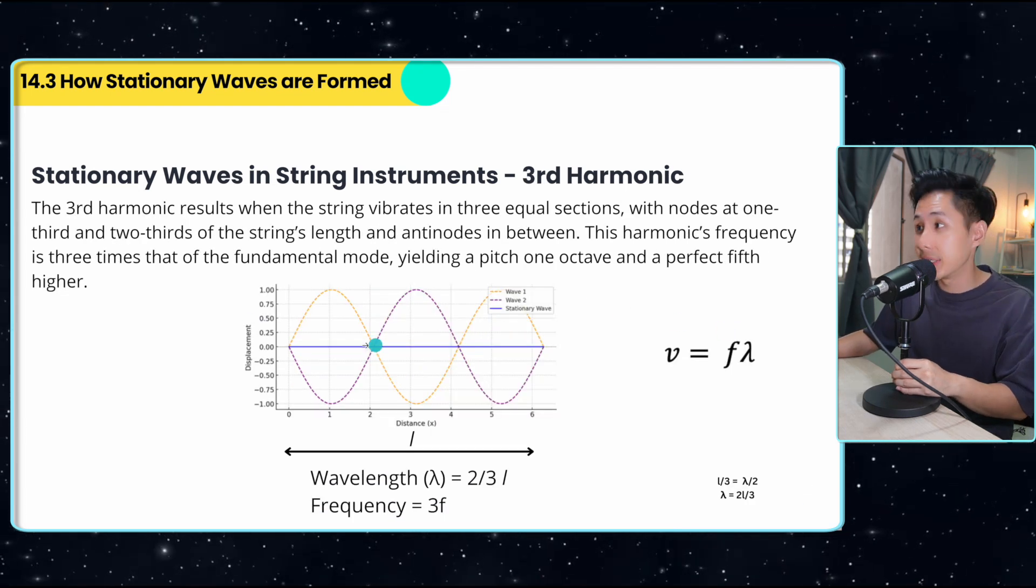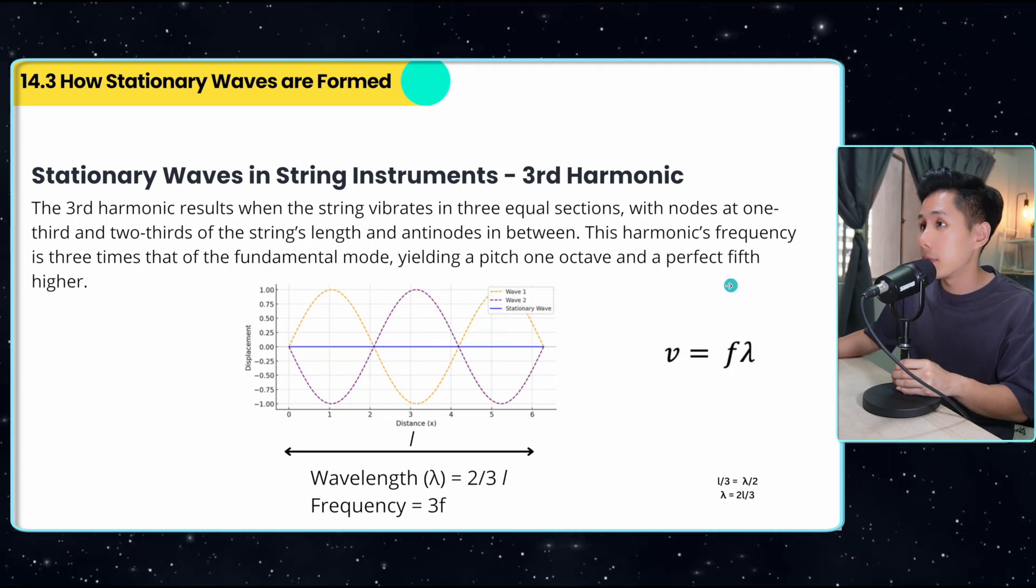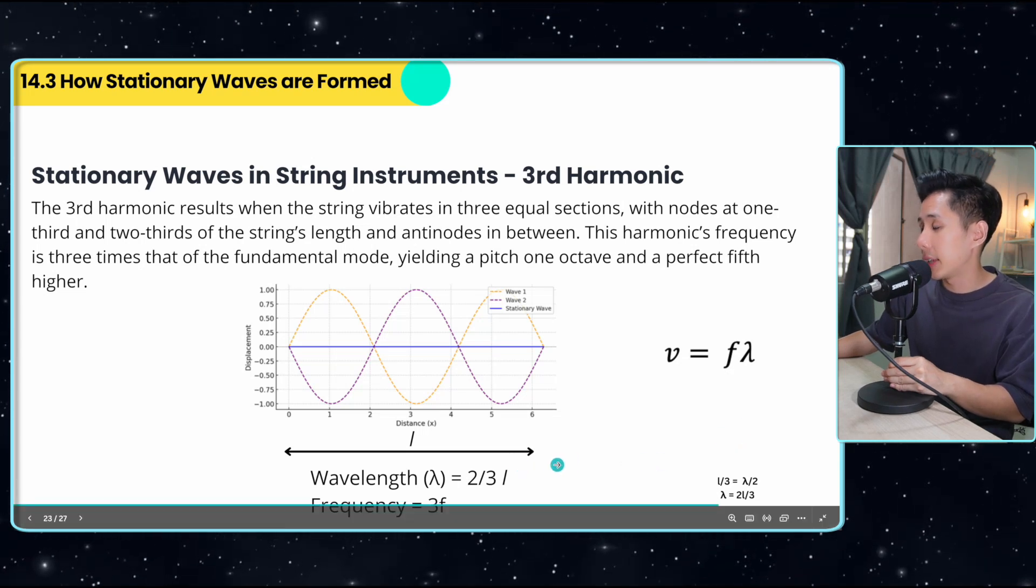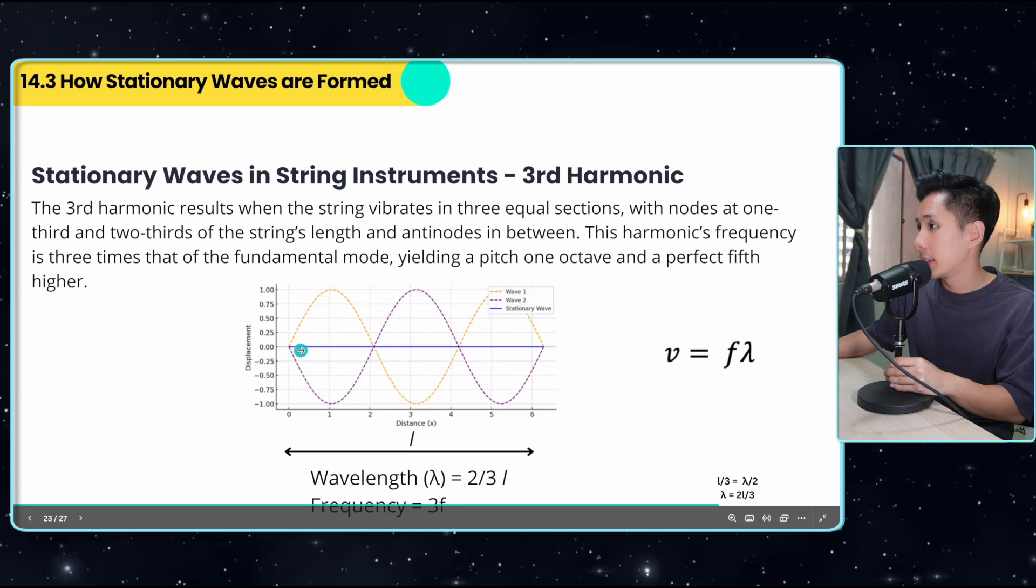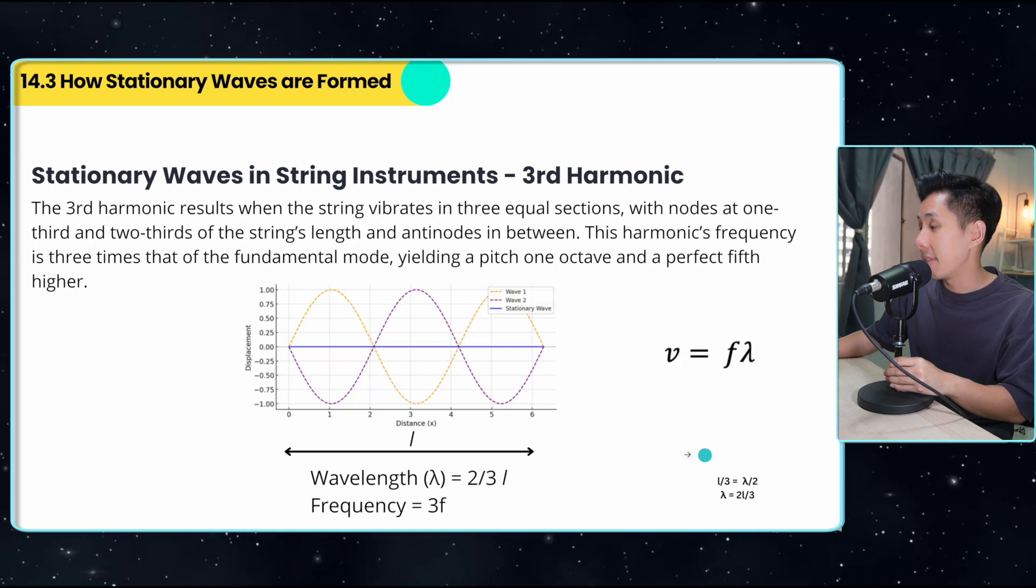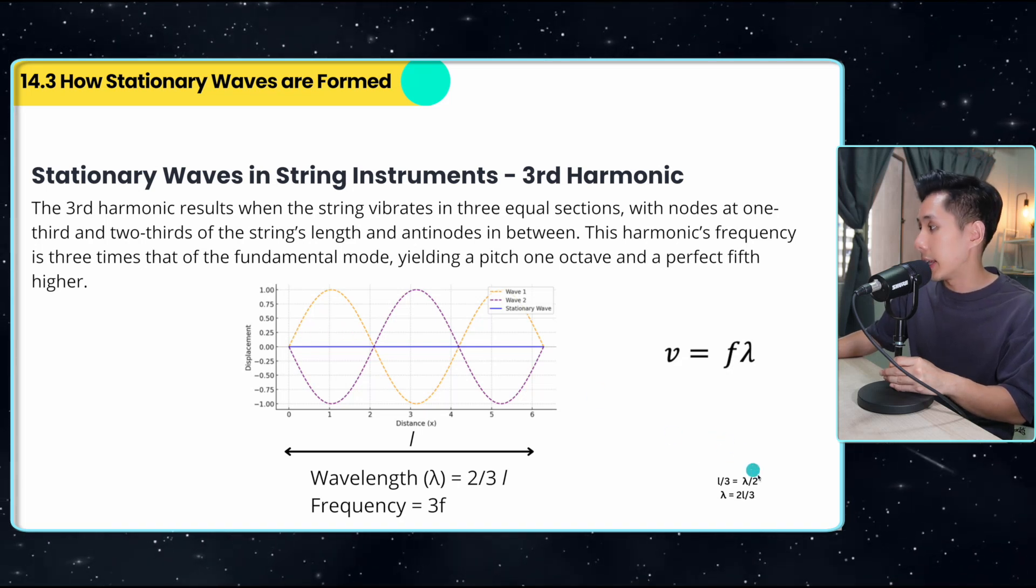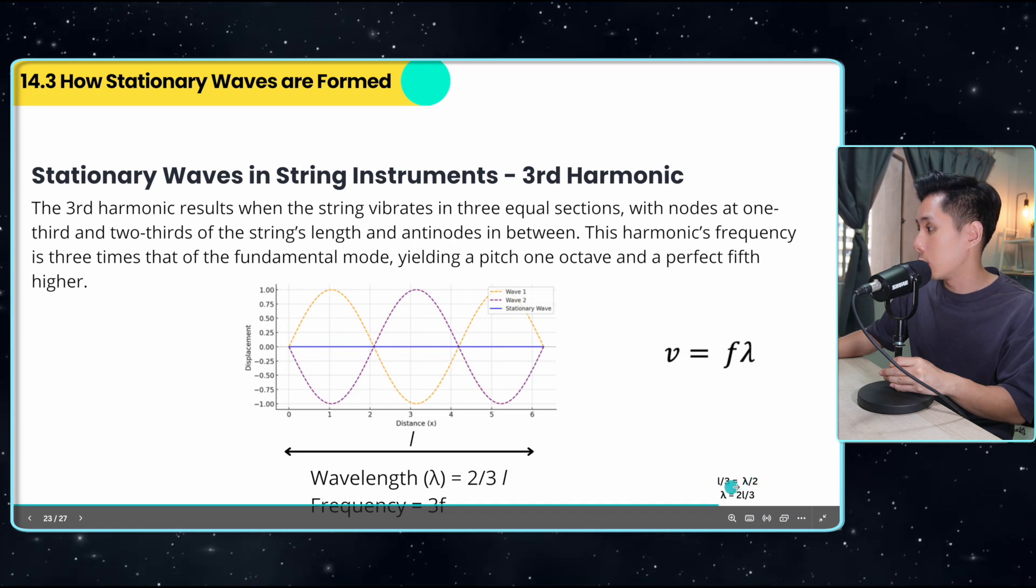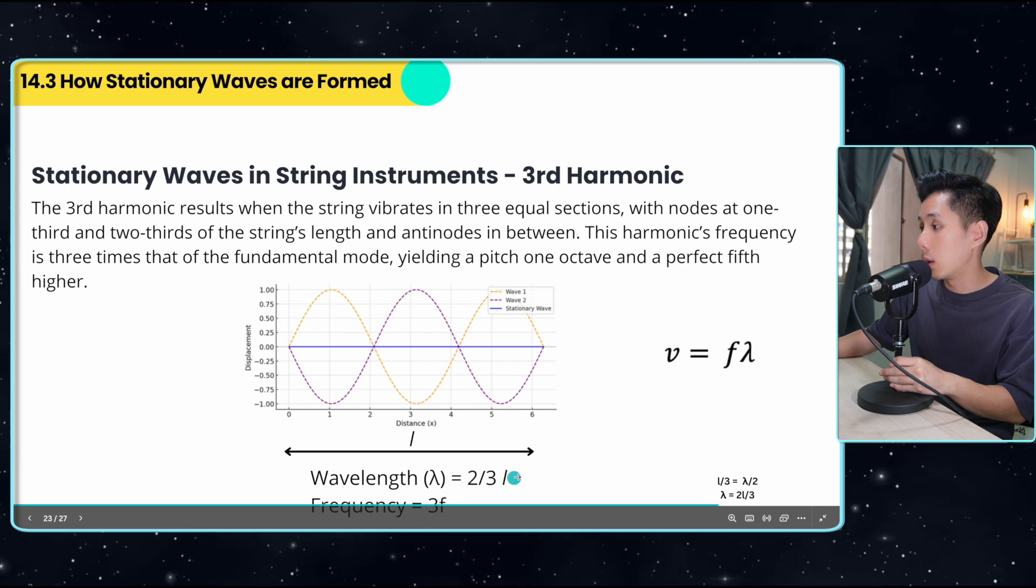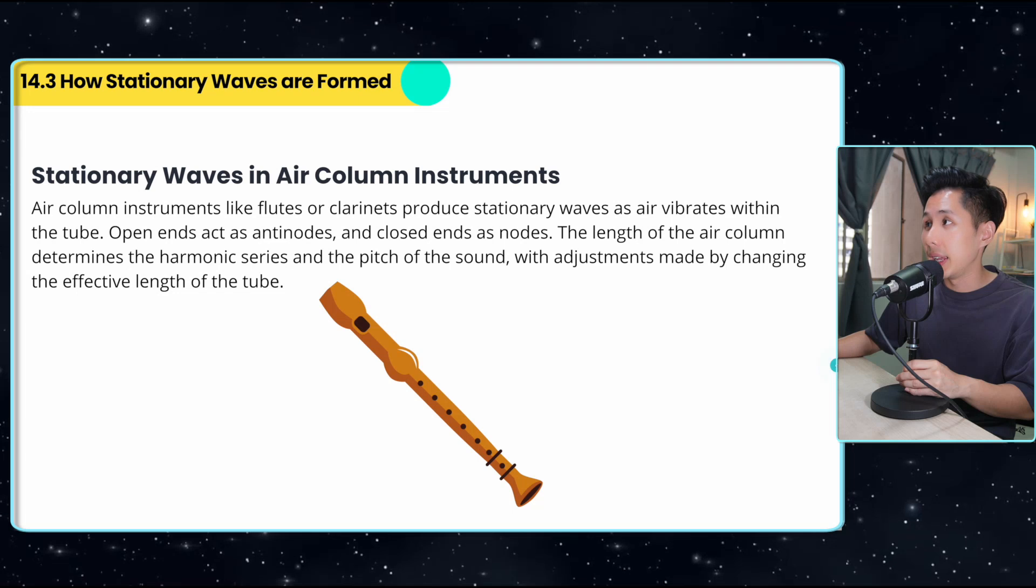Now third harmonic is the same, which is one more cycle. The sound that is produced is one octave and a perfect fifth higher. So if you look at the wavelength here, how do we derive that the wavelength is 2 over 3l? So again, you can see that from here to here, it's l over 3. And l over 3 is equal to lambda over 2. That's why if I want the lambda, I will just move the 2 into the other equation. So I got 2l over 3, which is 2 over 3 lambda here. So that's first, second, and third harmonic in a string instrument.